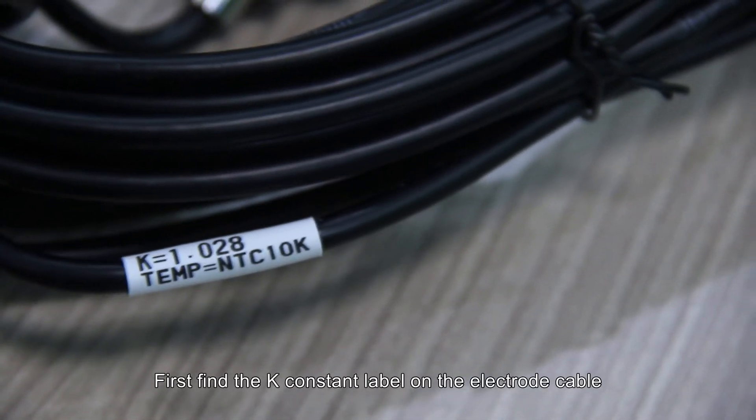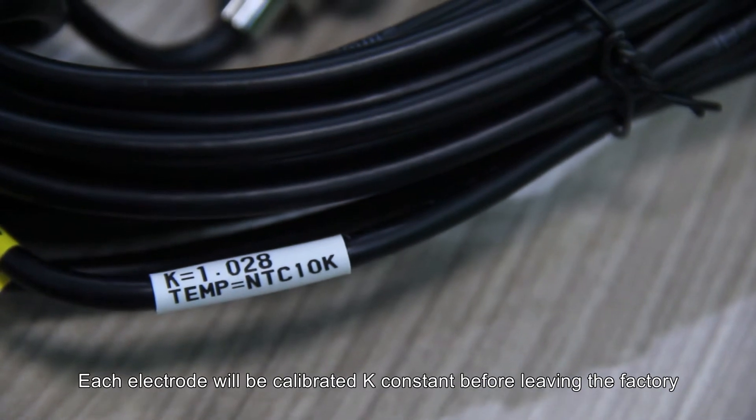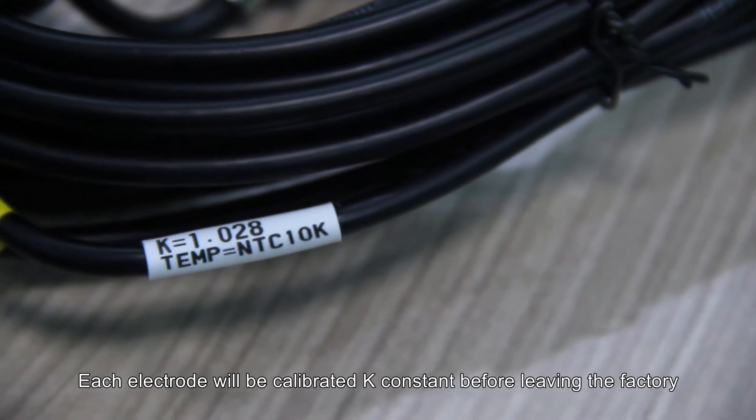First find the K constant label on the electrode cable. Each electrode will be calibrated K constant before leaving the factory.